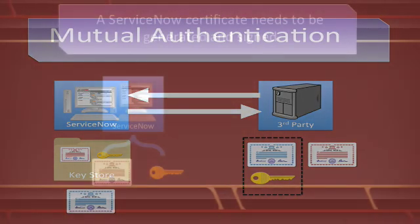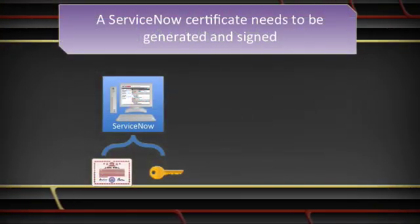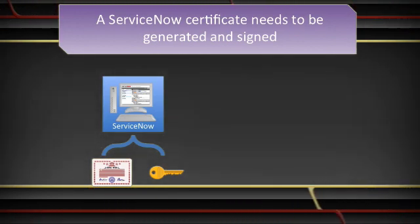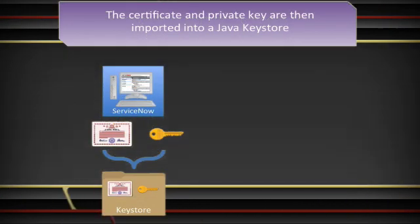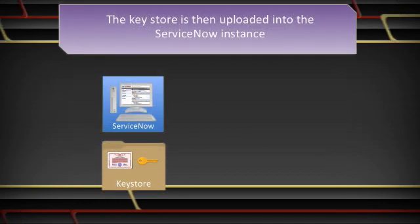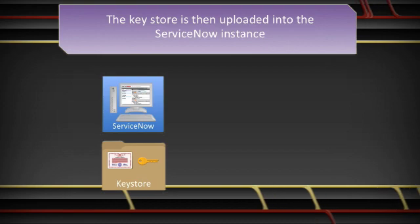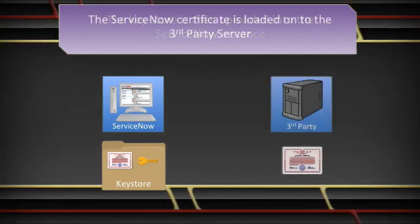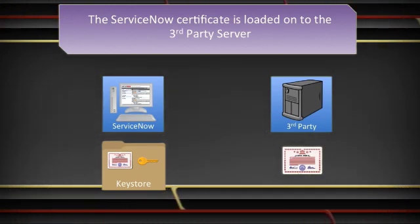First, a certificate must be generated and signed on behalf of the ServiceNow instance. You can do this on your own, or leverage a third-party certificate authority to generate the certificate and private key for you. Once you have your certificate and private key, load them into a Java Keystore file. Once loaded, that file should be uploaded into the ServiceNow instance as a Java Keystore record. You should then take the public certificate and share it with the third-party service.